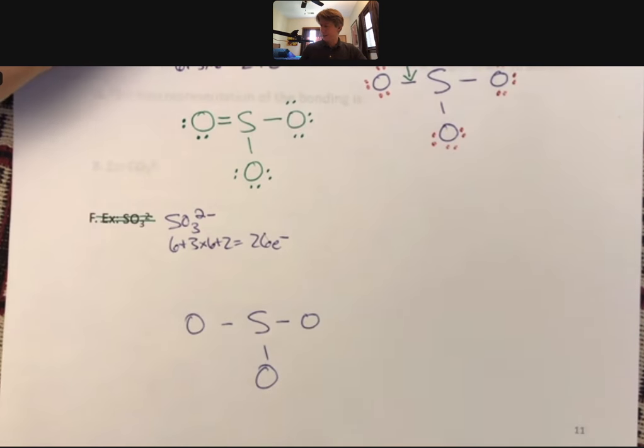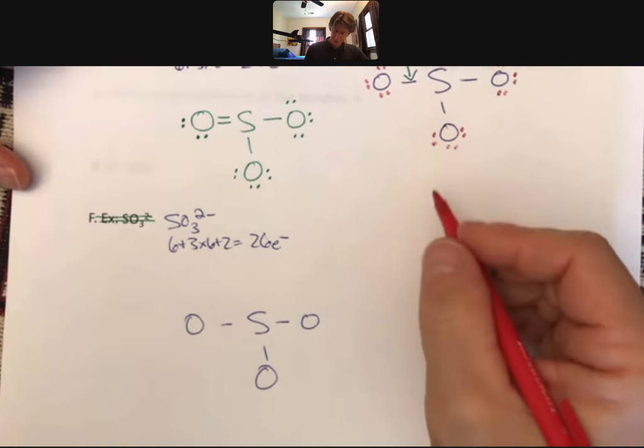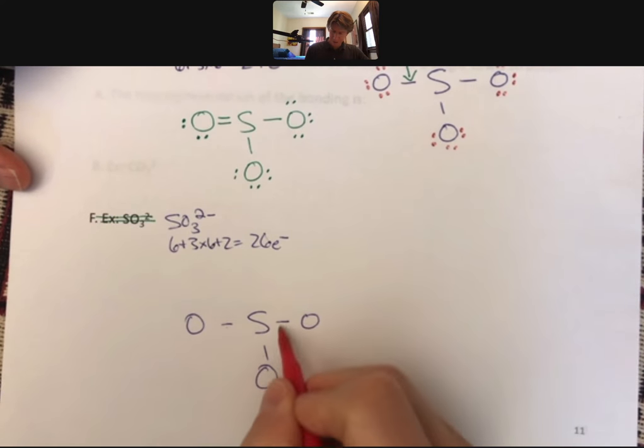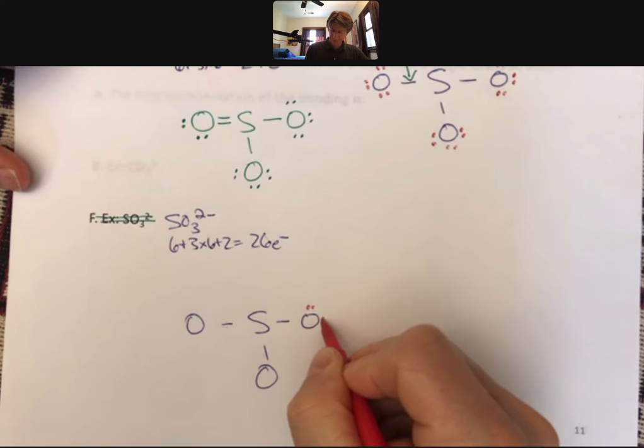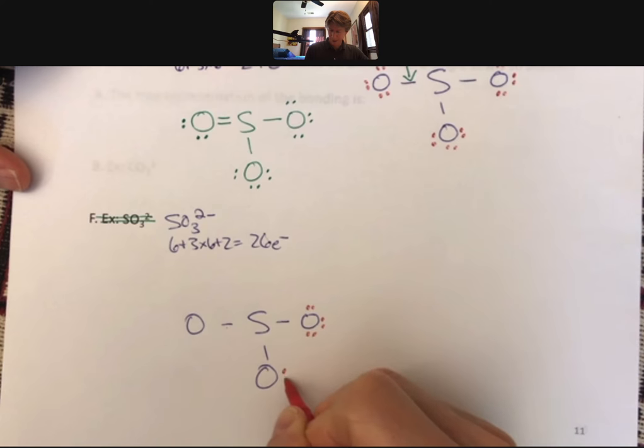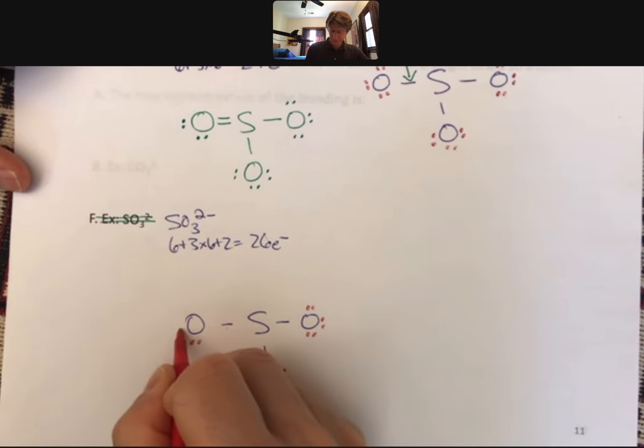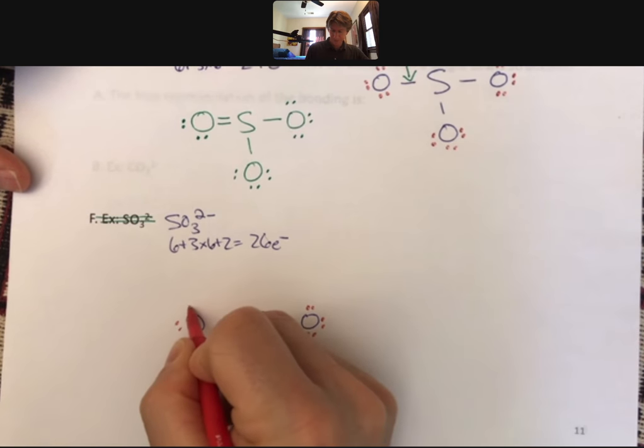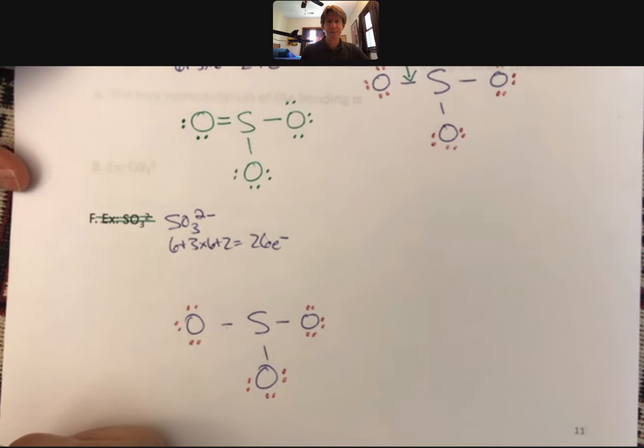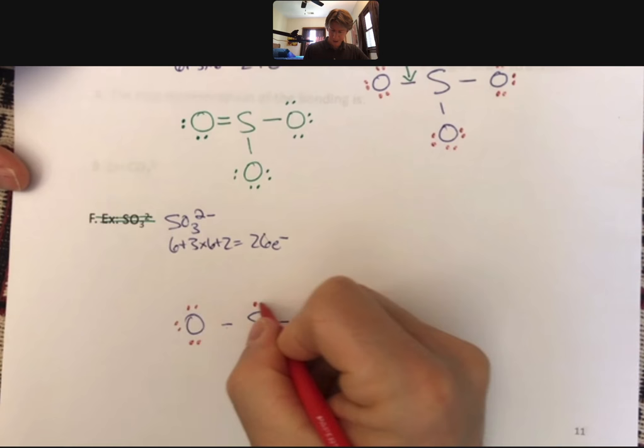Now if we go to the one down here, you can see we're going to have 2 more electrons. 2, 4, 6, 8, 10, 12, 14, 16, 18, 20, 22, 24, and I have 2 more, 26.